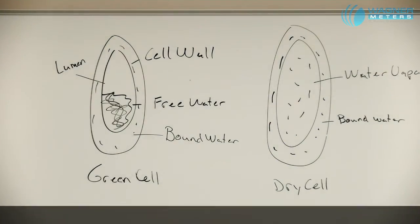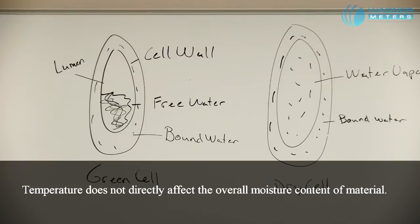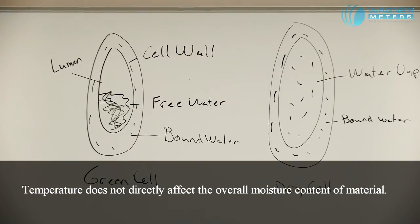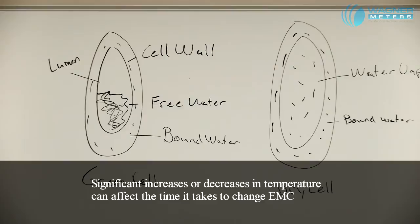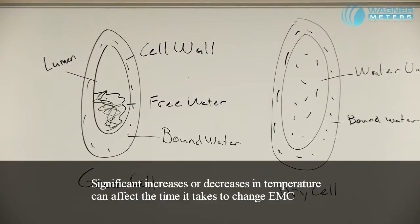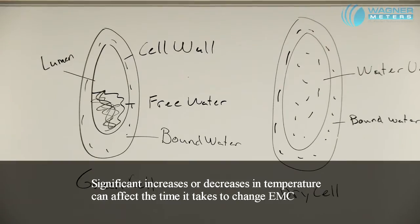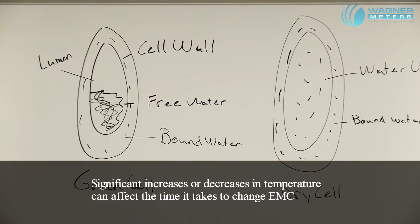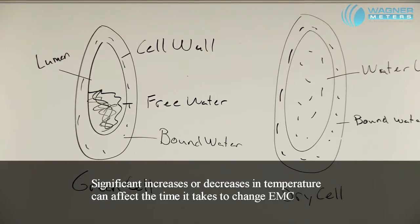It's one thing to note that temperature does not directly affect the overall moisture content of material, but significant increases or decreases in temperature can affect the amount of time it takes to change the equilibrium moisture content of a product or wood cell.